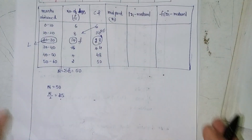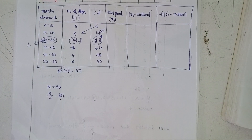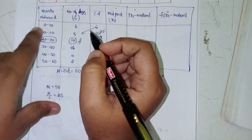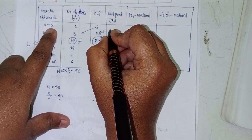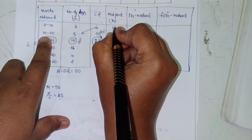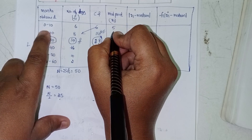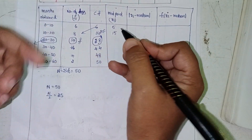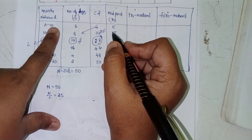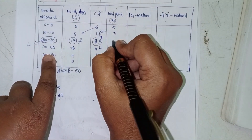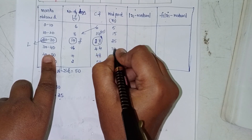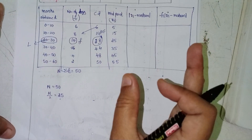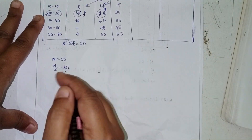Now we find the midpoints. For class 0-10: 0 plus 10 is 10, divided by 2 is 5. For 10-20: 10 plus 20 is 30 divided by 2 is 15. And continuing: 25, 35, 45, 55. The class width increases by 10 each time.